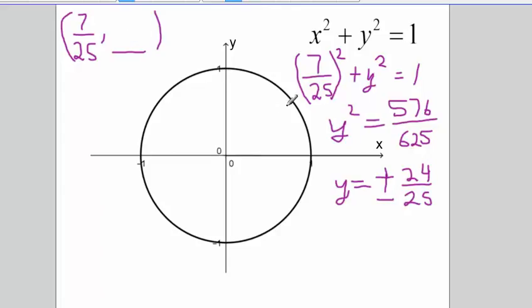So the points here, 7/25 is quite a bit less than a half. 24/25, that's almost 1. The positive 24/25 is going to be up here. And the 7/25, negative 24/25 is going to be down here.